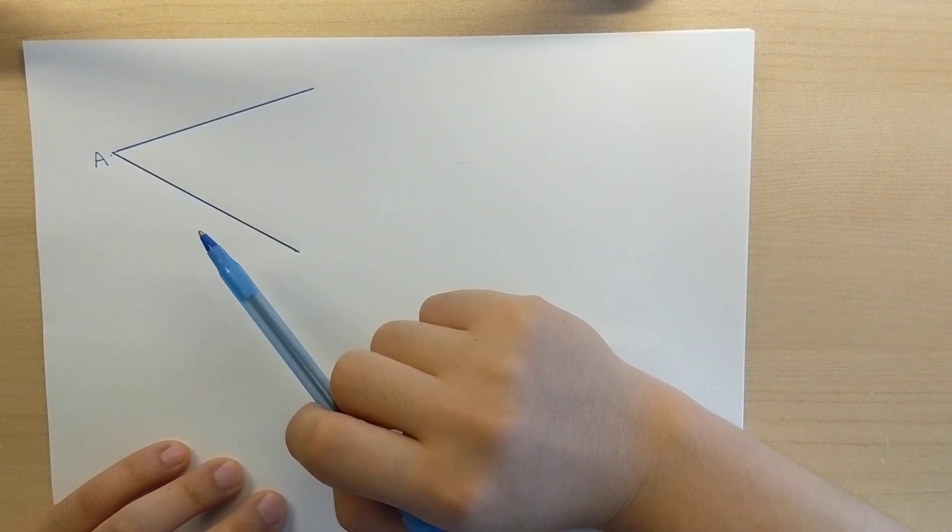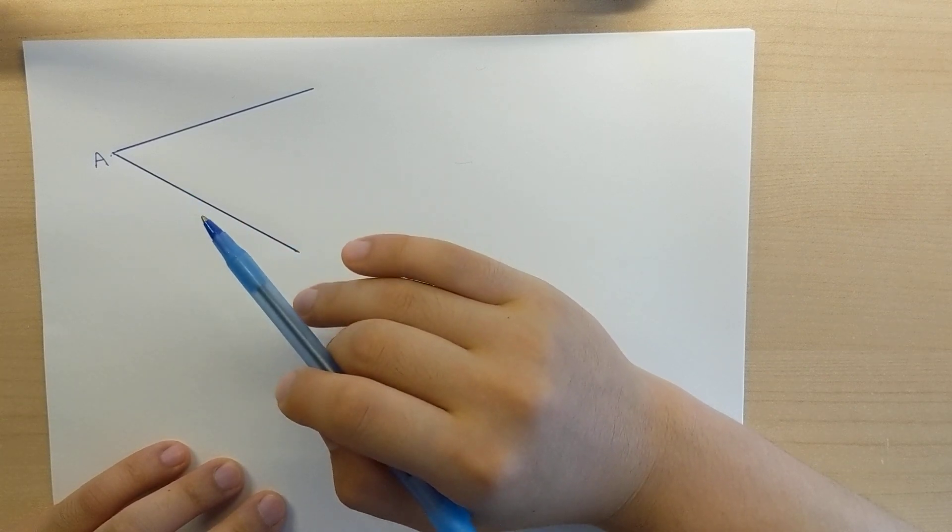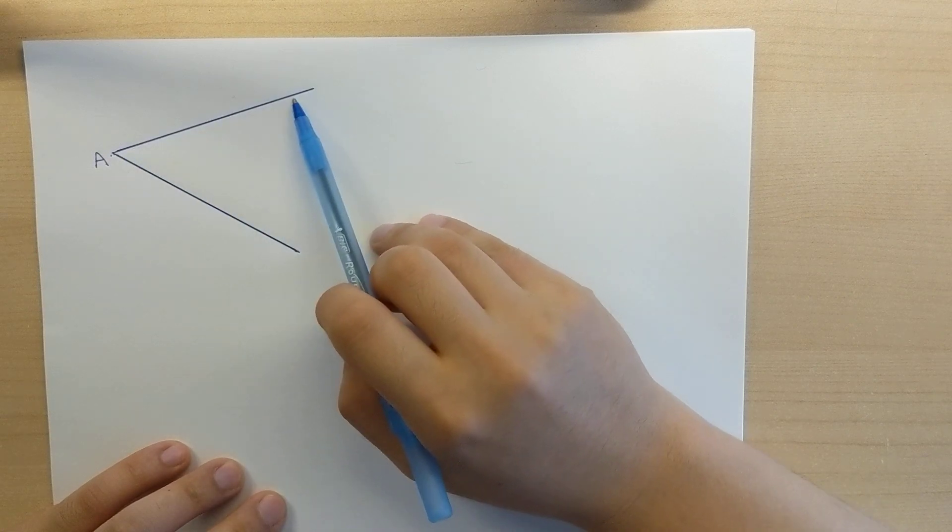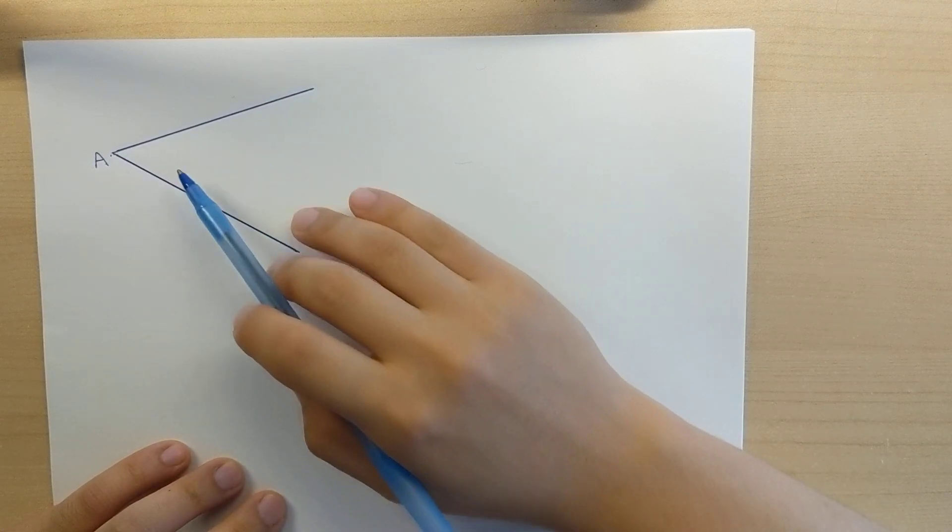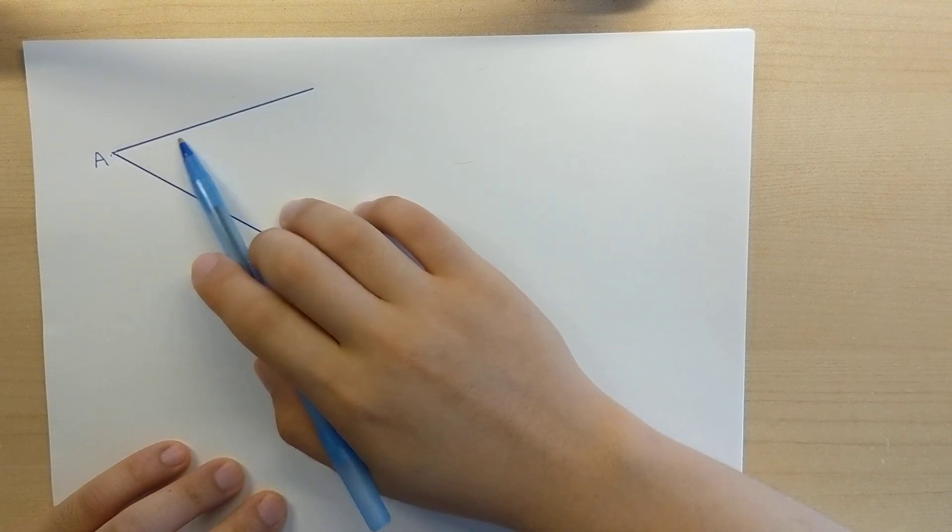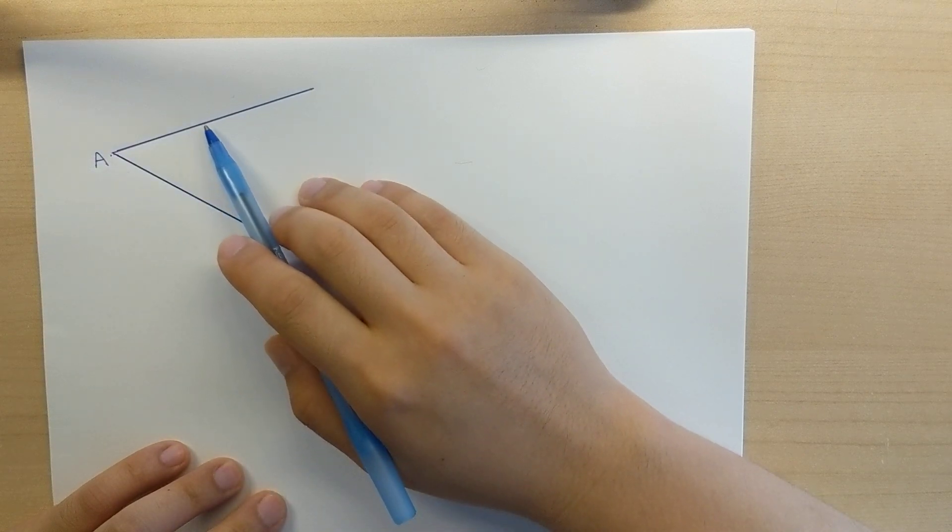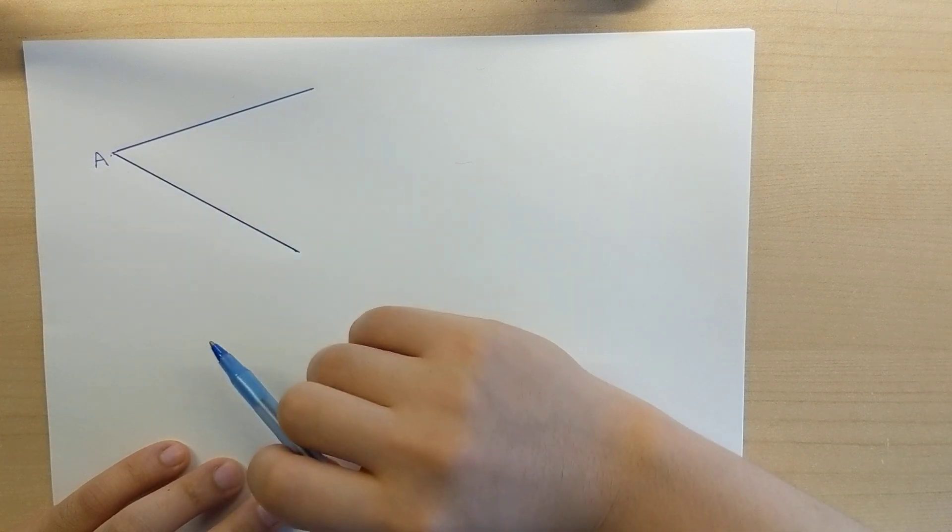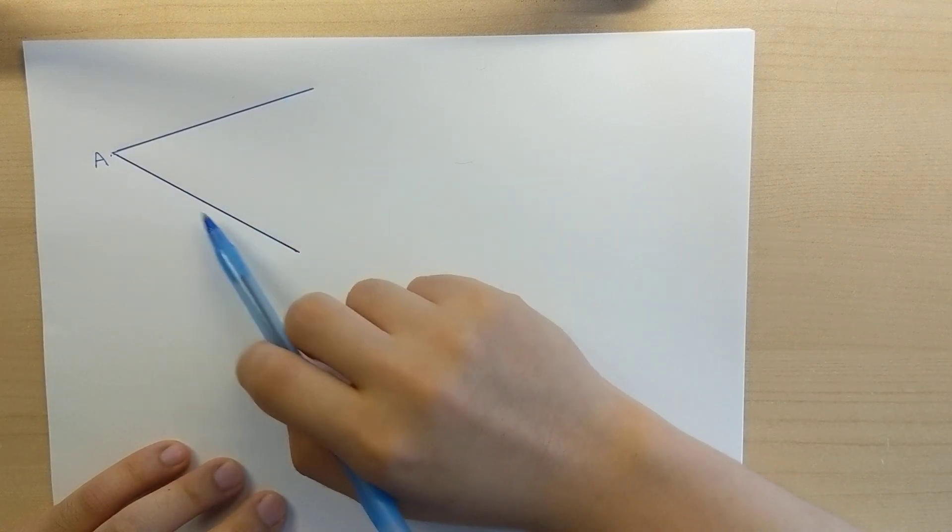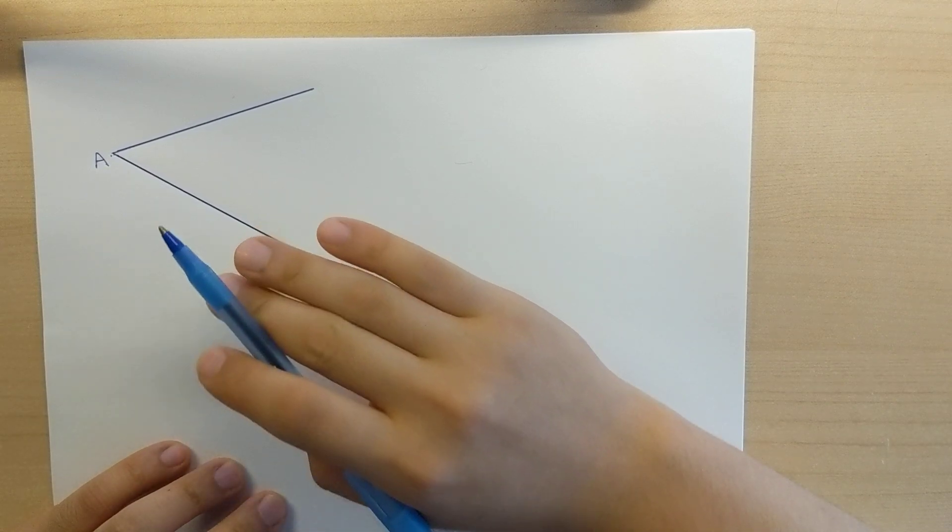Alright, so what I want you to think about is really try to understand the steps I'm about to explain. The first thing I want you to think about is, does the side length of the angle contribute to the opening of the angle? Really think about this. Does the side length of the angle contribute to how wide the opening of the angle is? If you answered no, you're absolutely right. The side length of the angle has absolutely no contribution to the opening of the angle.